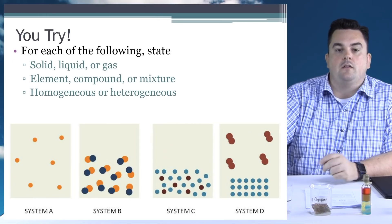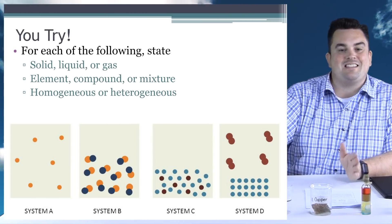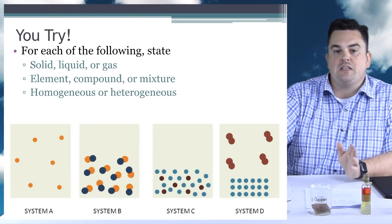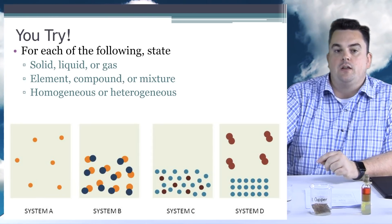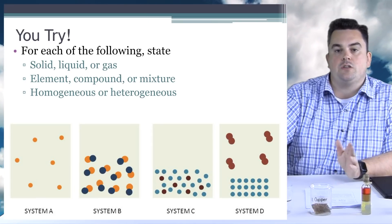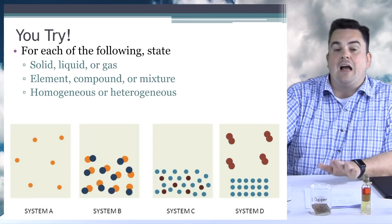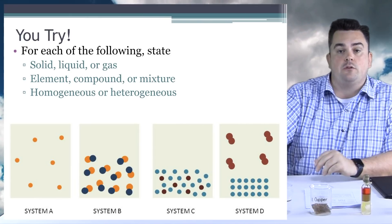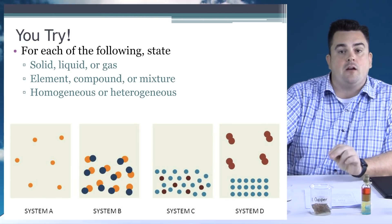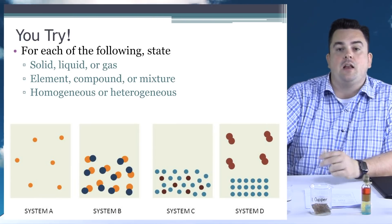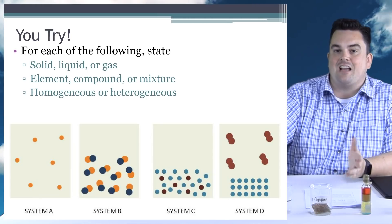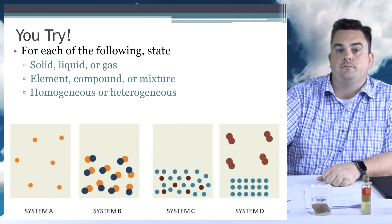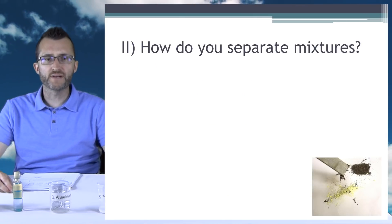You try! For each of the following, state solid, liquid, or gas; element, compound, or mixture; and state whether it's homogeneous or heterogeneous. Now mixtures can be either homogeneous or heterogeneous. It's a good tip here to remember that even though substances are not mixtures, they're considered homogeneous.